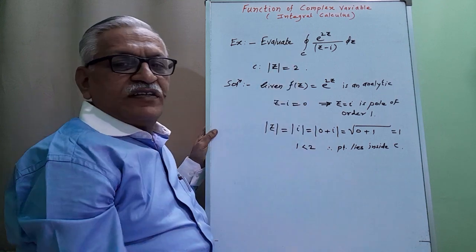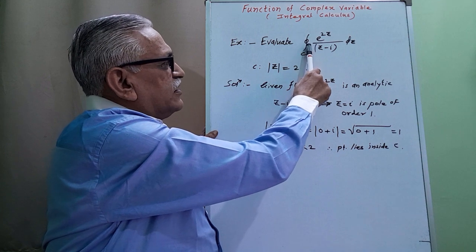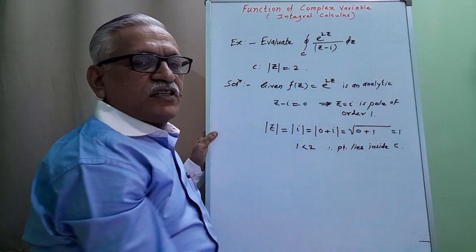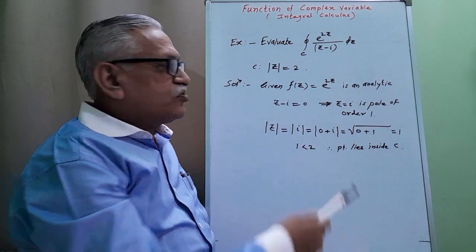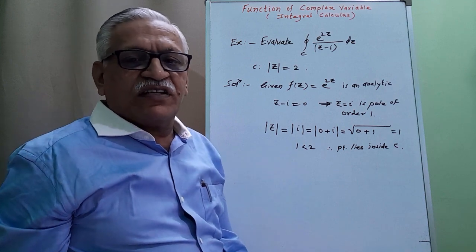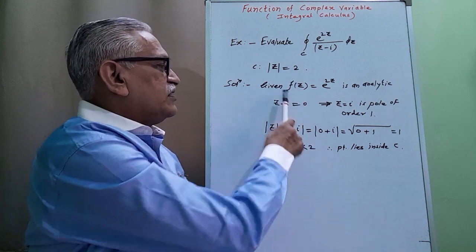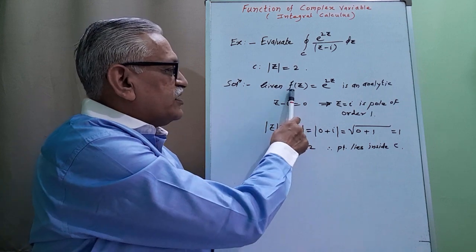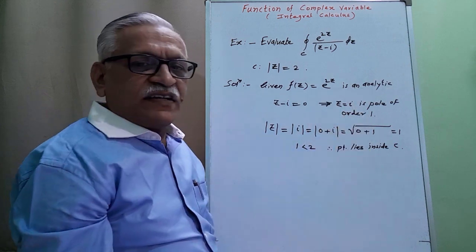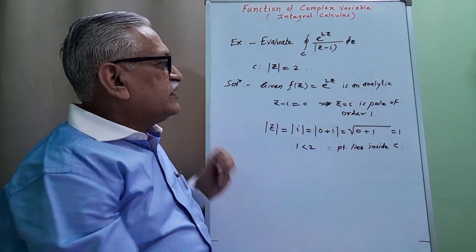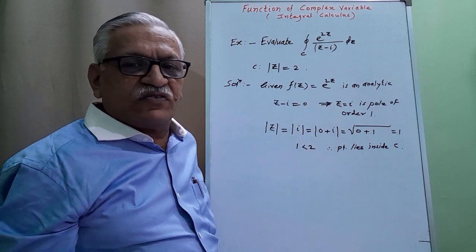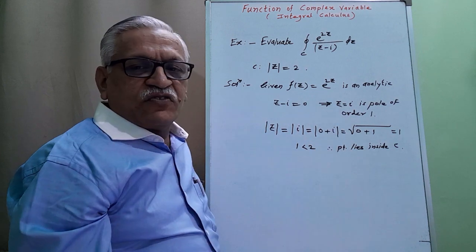Let us evaluate the third example: the contour integral of e^(2z) divided by (z minus i) with respect to z, where the closed curve C is |z| = 2 — once again a standard circle with center at origin and radius 2. Here, f(z) = e^(2z) is the given analytic function. To determine the pole, we equate the denominator to 0: z minus i = 0, giving z = i as a simple pole of order 1.